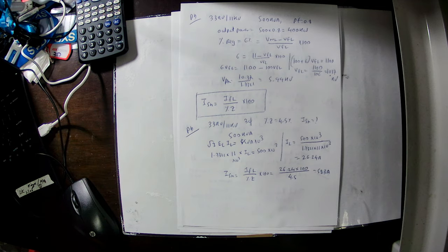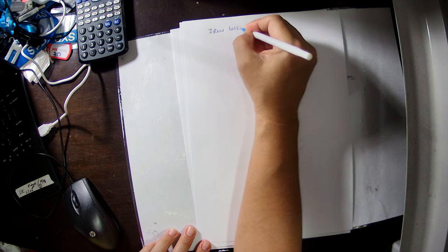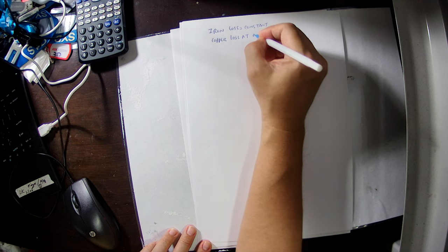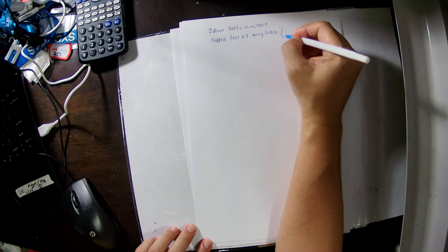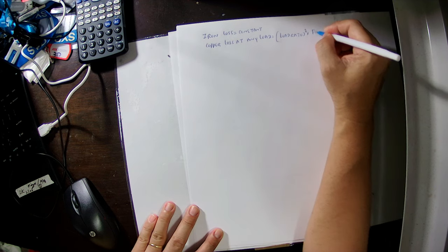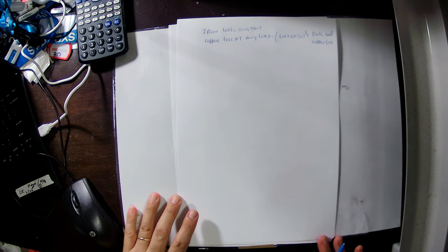Copper losses vary with load. Iron loss is always constant, while copper loss varies at any load. Copper loss at any load can be calculated as the load ratio squared, multiplied by full-load copper losses. This is the way we calculate copper losses at any load.